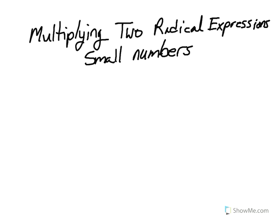This next video is about multiplying two radical expressions that have small numbers. What you're going to do is multiply the number parts and multiply the variable parts together using the multiplication property of square roots.